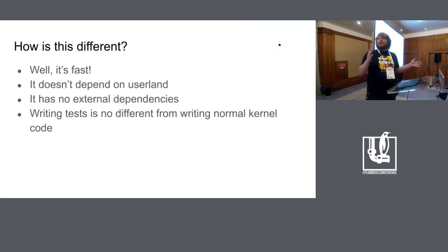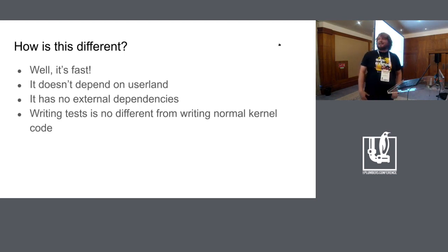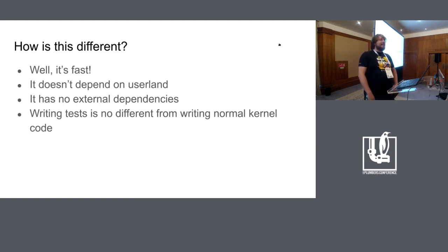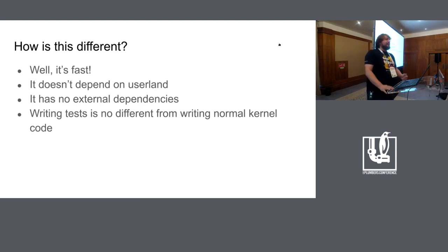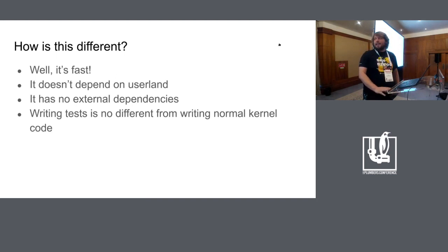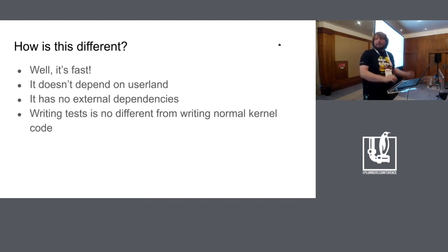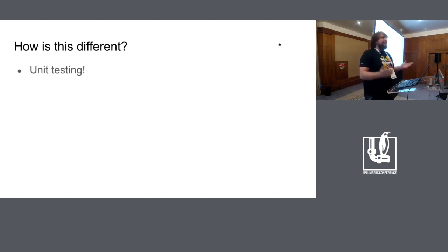So how is KUnit different from the testing we already have? First, it's pretty fast — the tests run pretty fast. Right now they're pretty much bound by how fast you can build the kernel. It doesn't depend on user land, it doesn't have any external dependencies, and writing a test is no different than writing any regular kernel code because the actual test links against the code that's under test. That means you can just test arbitrary functions in the kernel. In other words, it's unit testing.